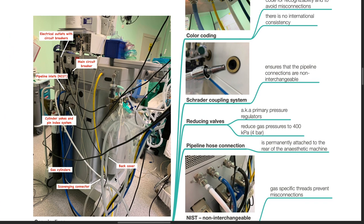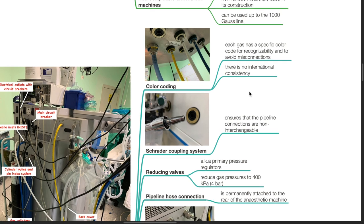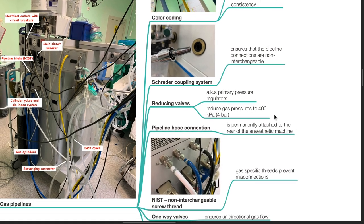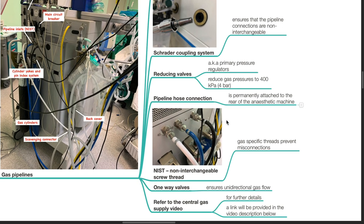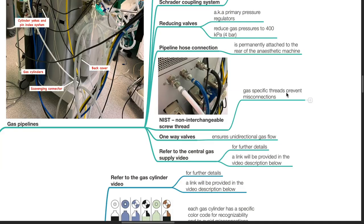Gas pipelines. Color coding is present for each gas for easy recognizability and to avoid misconnections. However, there is no international consistency with the color coding. Schrader coupling system ensures that the pipeline connections are non-interchangeable. Reducing valves, also known as primary pressure regulators, reduce gas pressures to 4 bar. Pipeline hose connection is permanently attached to the rear of the anesthetic machine. NIST, or non-interchangeable screw thread, are gas-specific threads to prevent misconnections. One-way valves ensure unidirectional gas flow. Refer to the central gas supply video for further details.